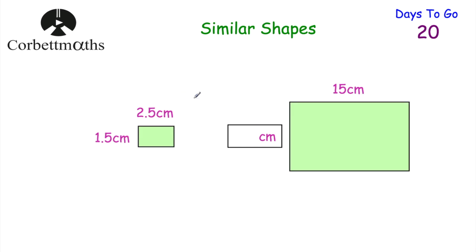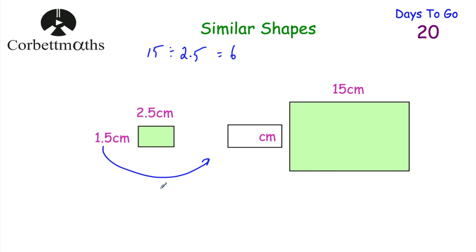We've got two mathematically similar rectangles and we want to find the width of the larger rectangle. Press pause and try it now. To find the scale factor, divide the length of the larger rectangle (15) by the length of the smaller one (2.5): 15 divided by 2.5 equals 6. So the width of the larger rectangle is 1.5 multiplied by 6, which equals 9 centimetres.